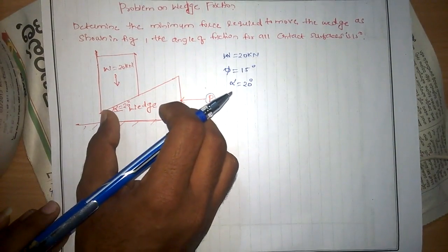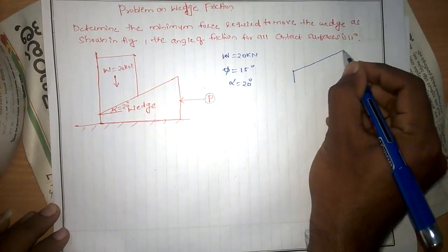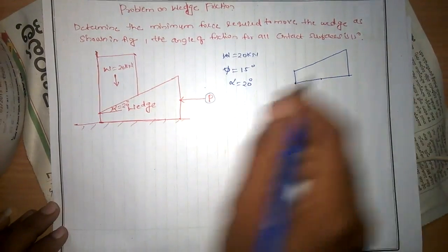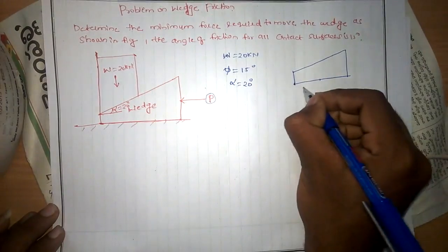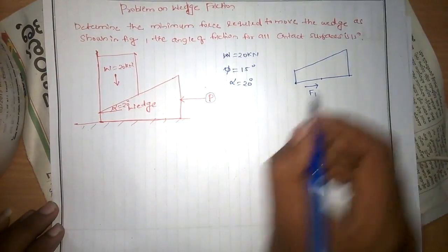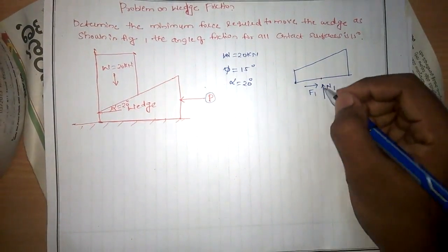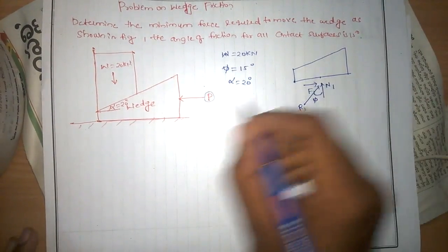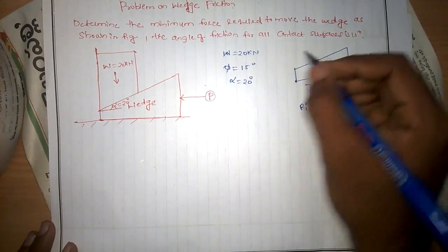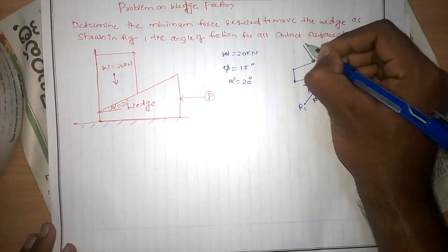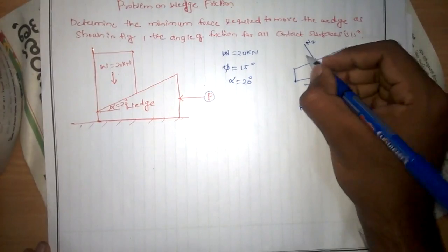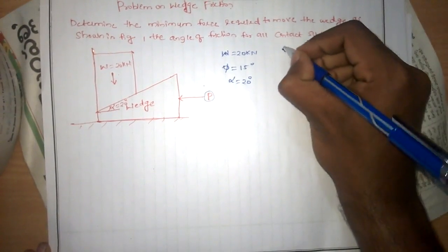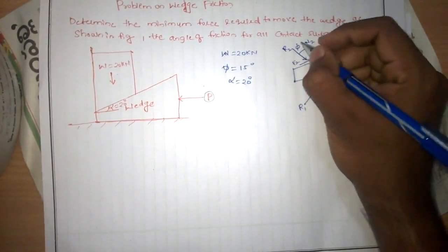First, draw the equilibrium diagram of this wedge. Due to the contact surface, when force P is applied, friction is generated in the opposite direction, considered as F1, and a normal reaction is generated. Due to these two forces, there is a resultant R1 making an angle of 5 degrees (i.e., 15 degrees angle of friction). Due to the contact of the load on the wedge, a normal reaction N2 is generated normal to the surface. Friction F2 is generated opposite to the wedge's motion. The resultant R2 makes an angle of 15 degrees (angle of friction).